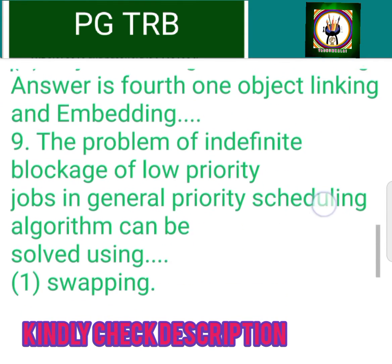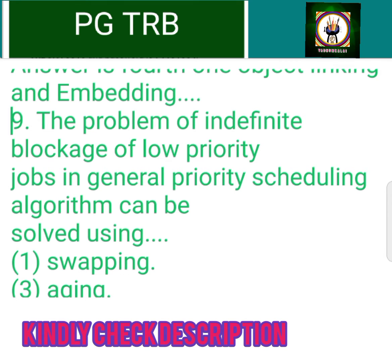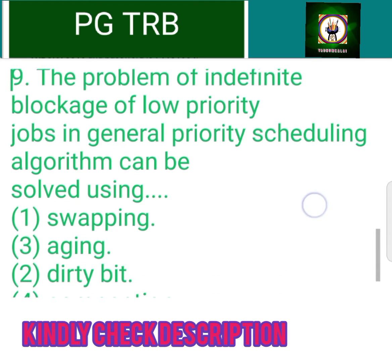The problem of indefinite blockage of low priority jobs in a general priority scheduling algorithm can be solved using: 1. Swapping, 2. Dirty bit, 3. Aging, 4. Compaction. Answer is 3rd: Aging.